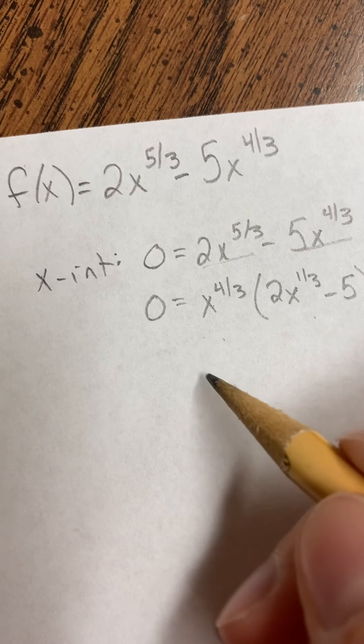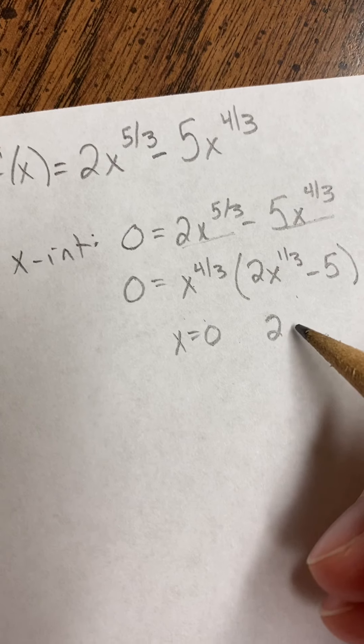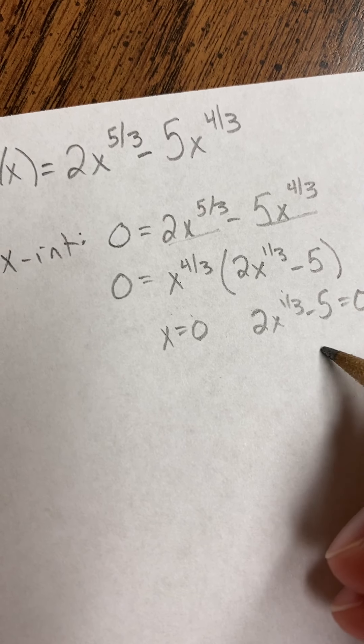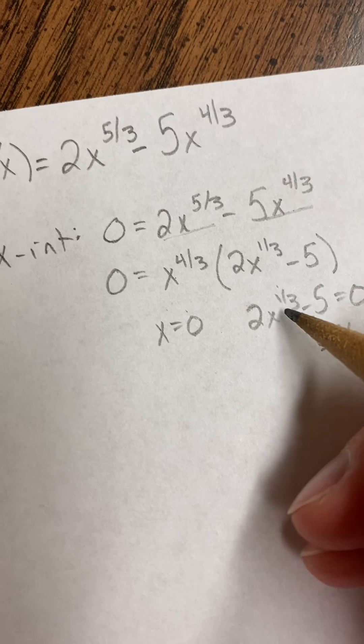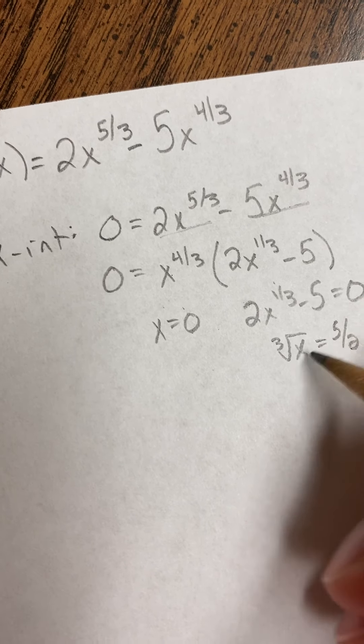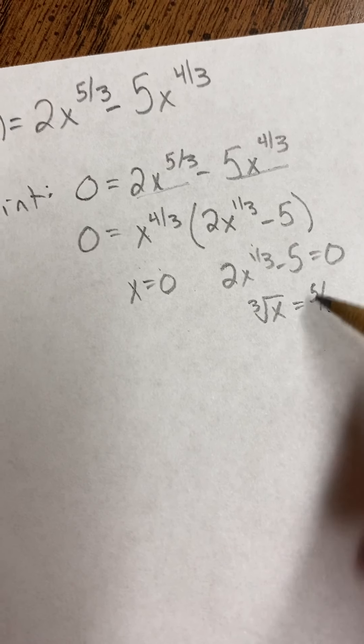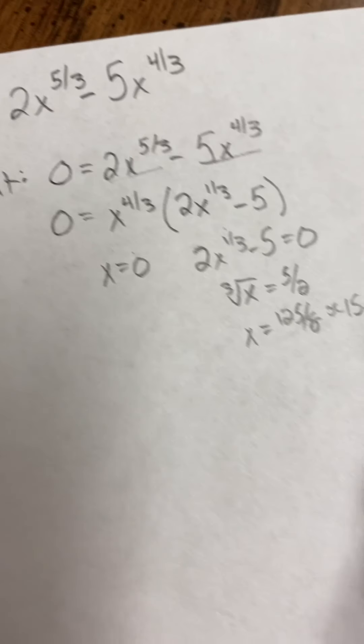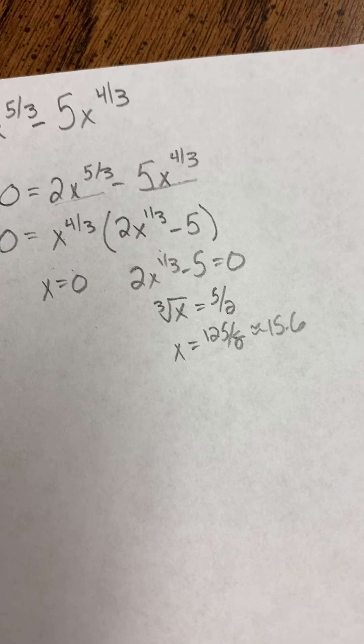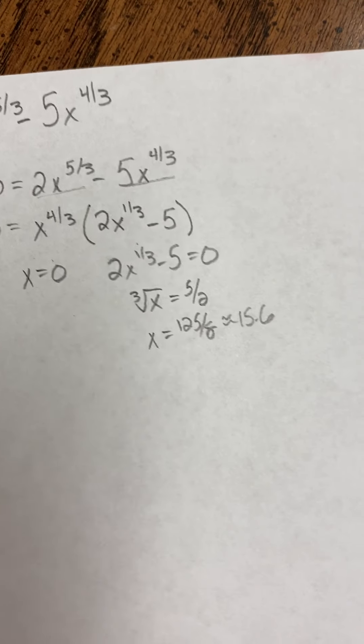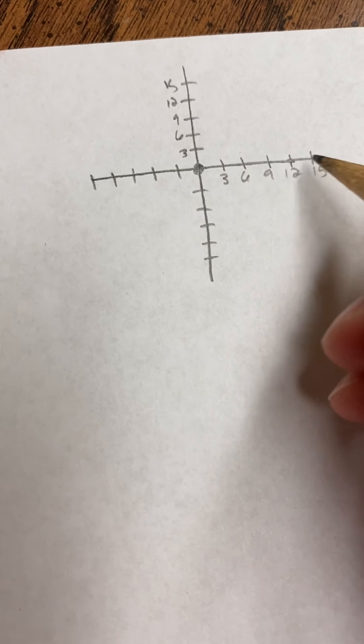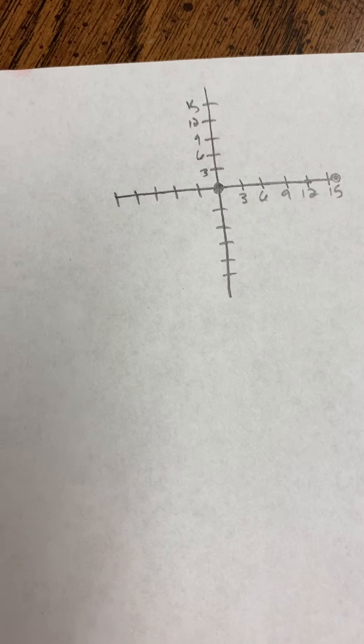And then when we set these both equal to zero, we get x equals zero, or 2x to the one-third minus 5 equals zero. So we can add 5 and divide by 2. And then remember, x to the one-third, that's the same thing as the cube root of x. So to solve this, we're going to cube both sides, and we get 125 over 8, which is like 15 point something, I believe. So our 2 x-intercepts are zero and 125 over 8. So I'm going to graph these. I went by threes. I really like counting by threes. So there it is. So 15 point something. Those are x-intercepts.